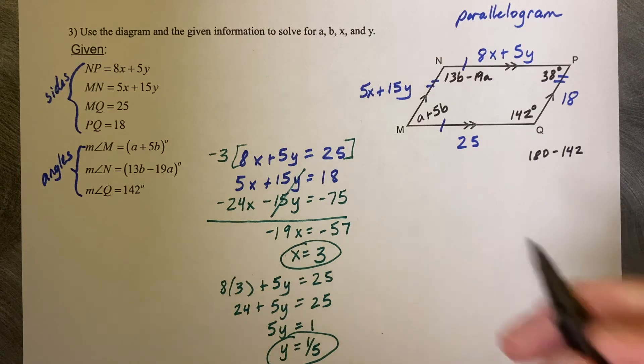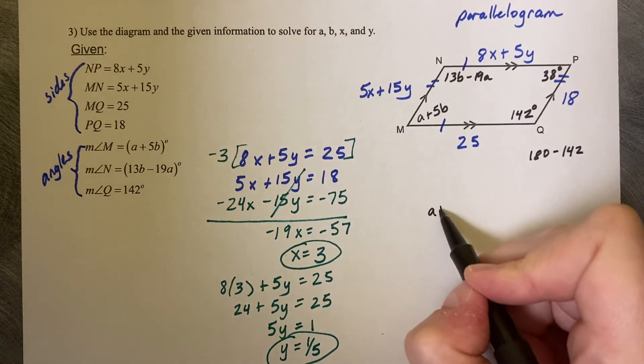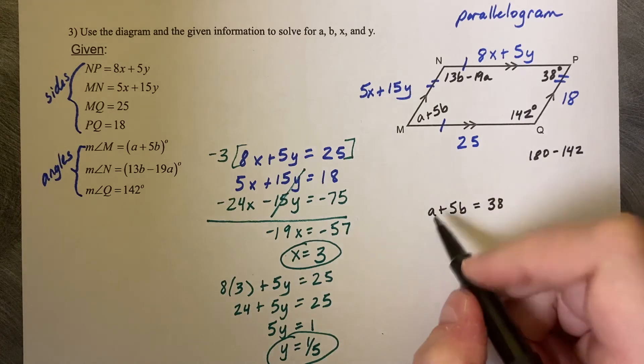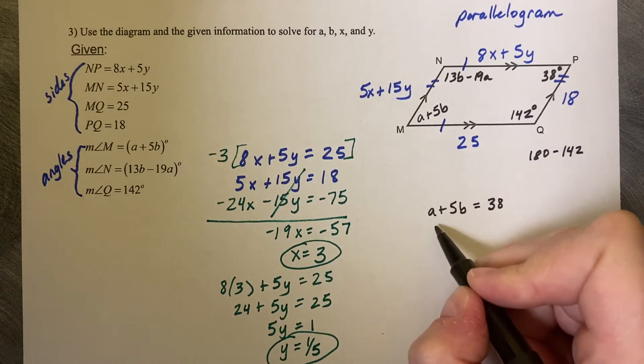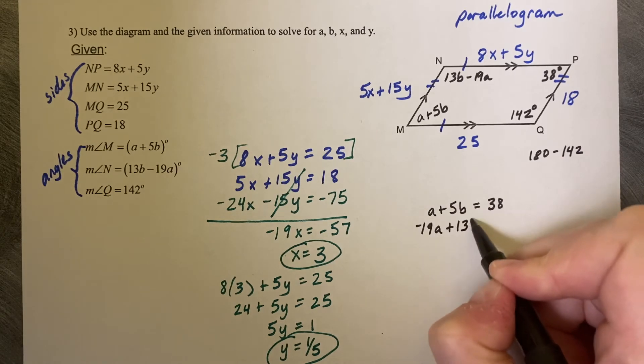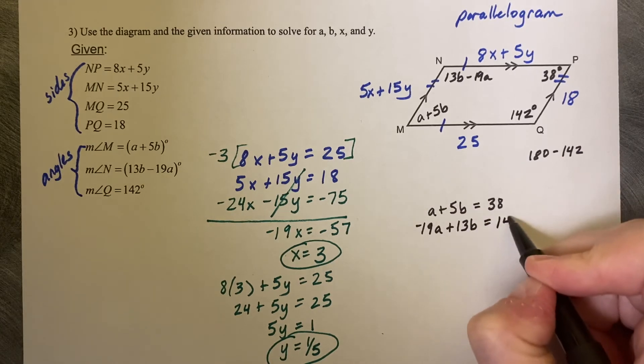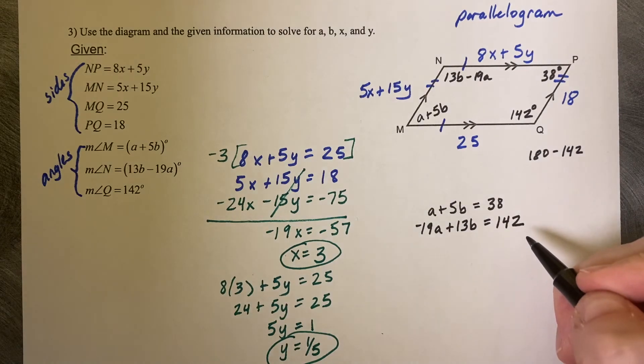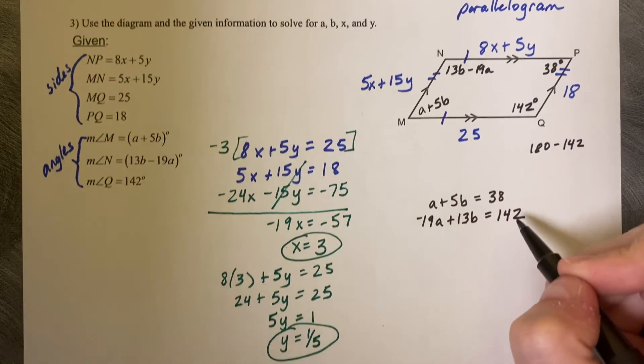So now our system is A plus 5B equals 38 and 13 but we can rewrite it in the other order so negative 19A plus 13B equals 142. Pause this video, try on solving this system of equations.